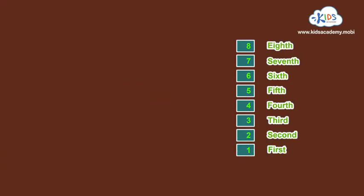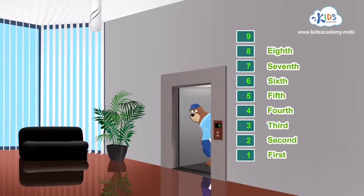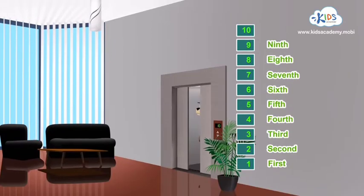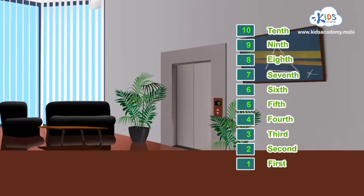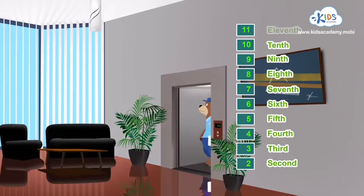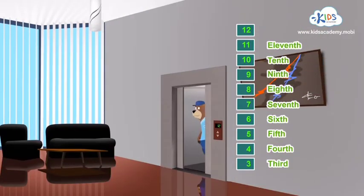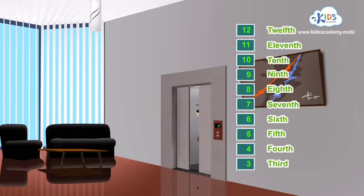Six — the sixth. Seven — it's the seventh floor. Eight — the eighth. Is this the floor I'm looking for? No, no, it's the ninth floor. Great counting, everybody! Ten — the tenth. Eleven. Twelve — the twelfth floor.